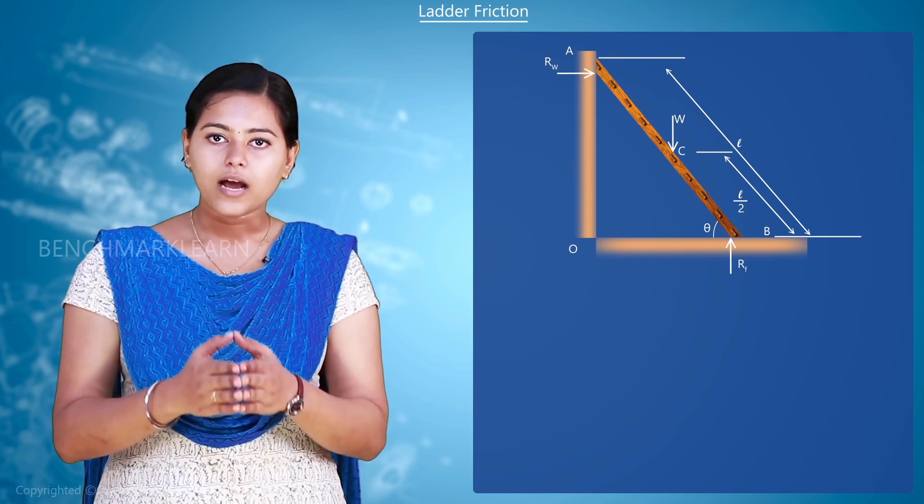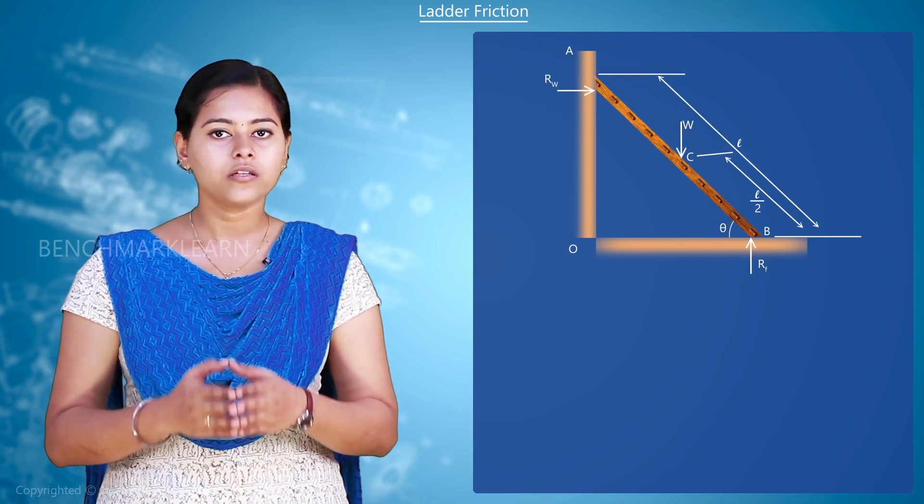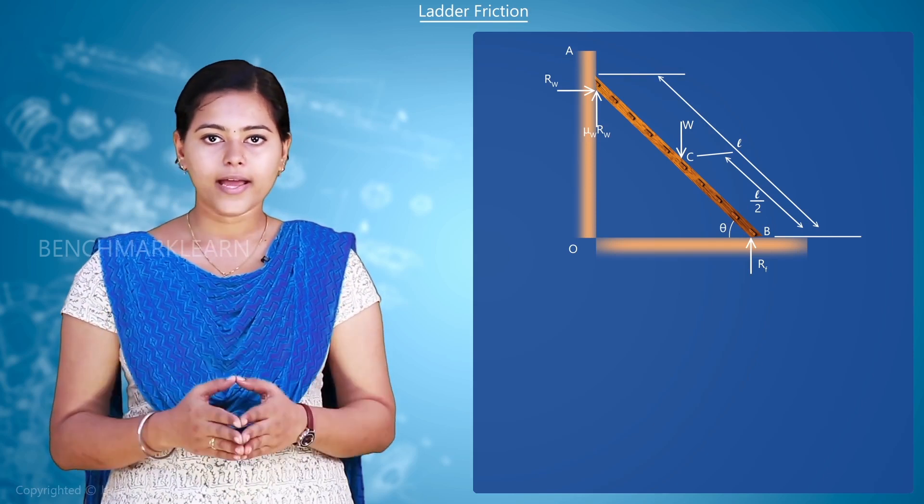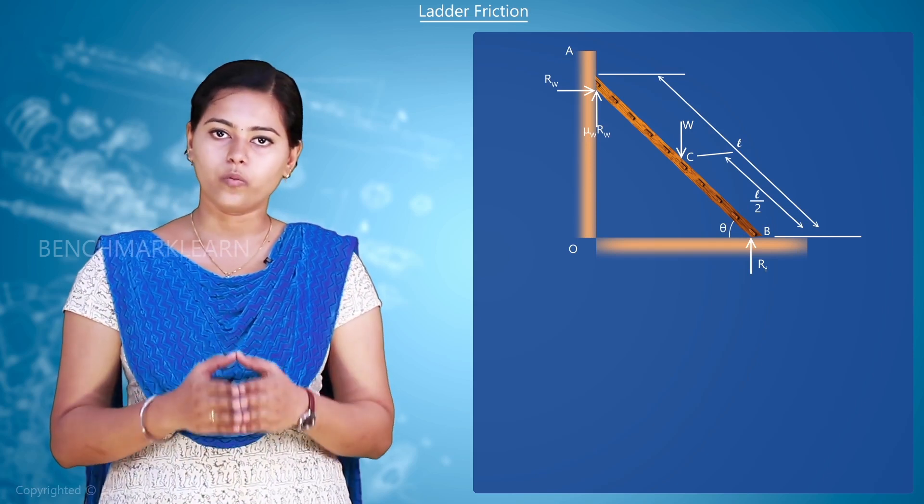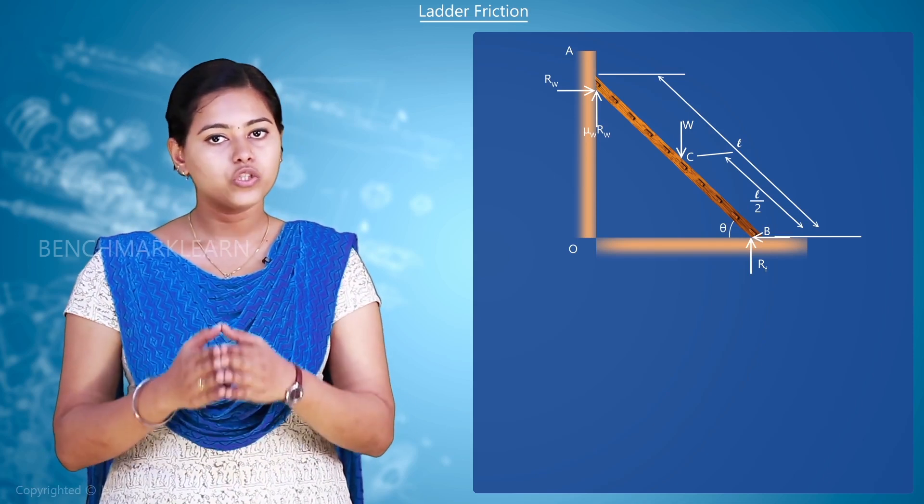Here, when the upper end tends to slide down, the force of friction will be acting vertically upwards and the lower end tends to move away from the wall and therefore the force of friction will be acting towards the wall.